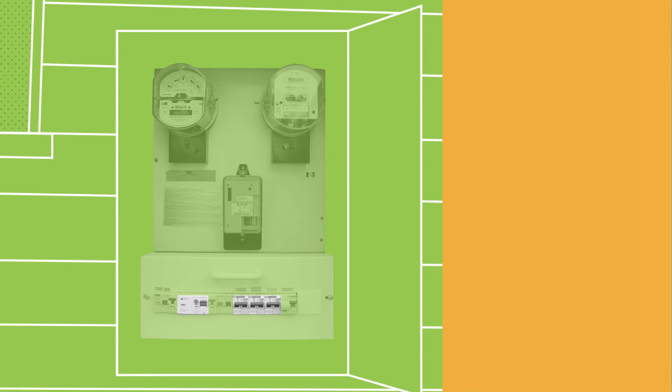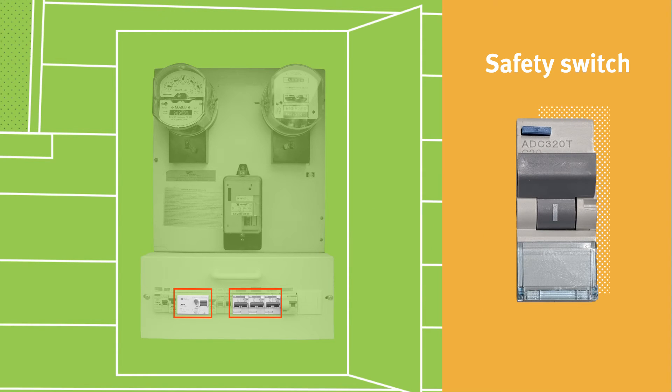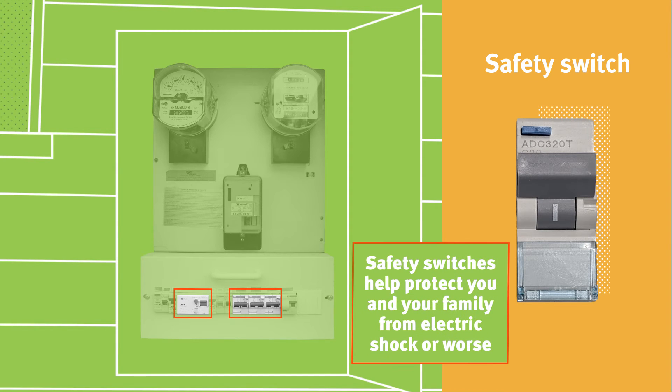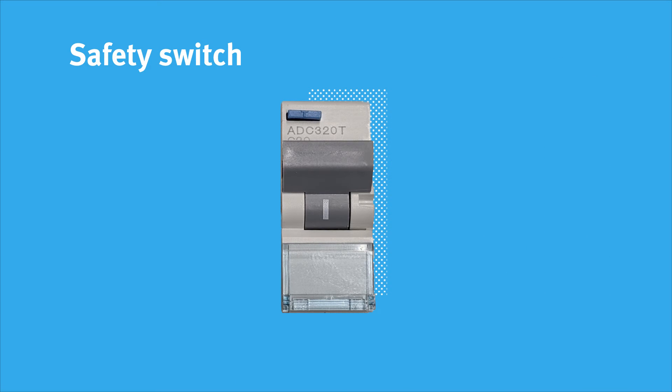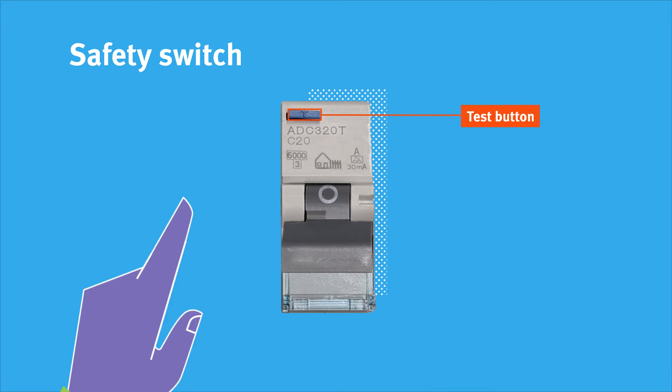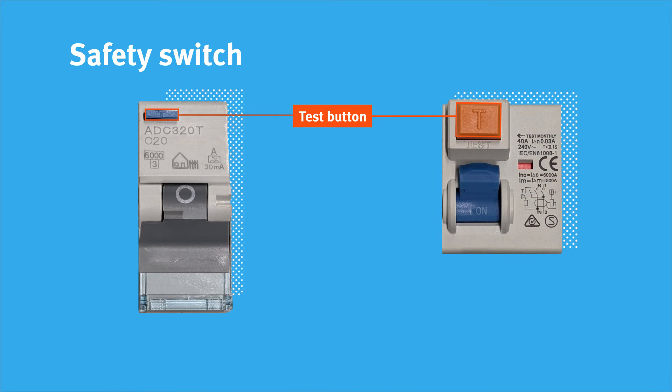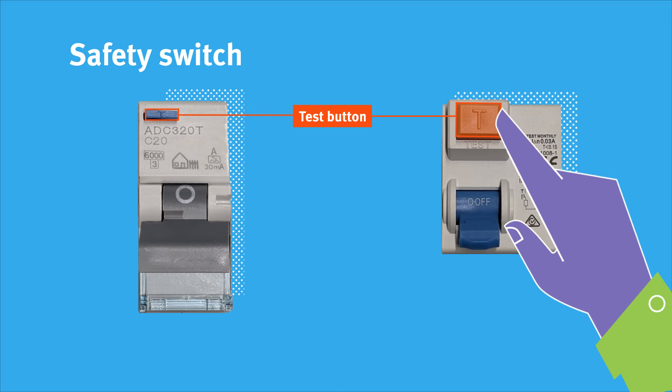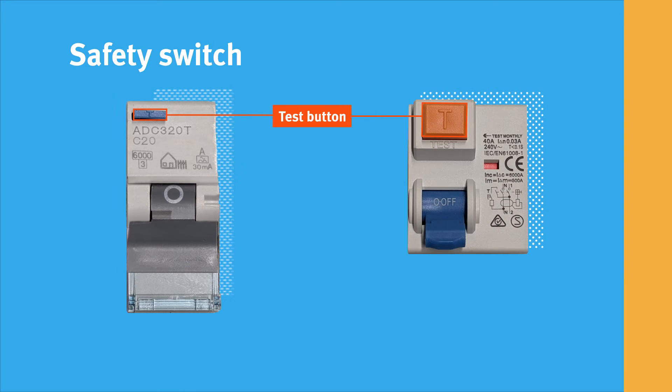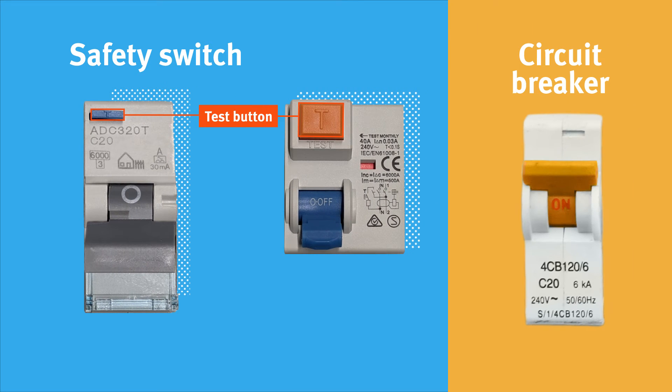However, the real stars of your switchboard are the safety switches. These help protect you and your family from electric shock or worse. Safety switches look similar to circuit breakers, but have a test or T button on them. Your safety switch can even be combined with your circuit breaker in one device, with a test button. Circuit breakers have no test button.